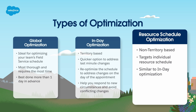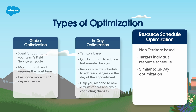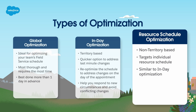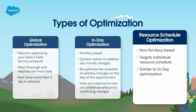Resource schedule optimization — non-territory. This type of optimization targets an individual resource's schedule on your team and is similar to in-day optimization. However, the primary difference is it targets an individual resource as opposed to an entire territory or set of territories.